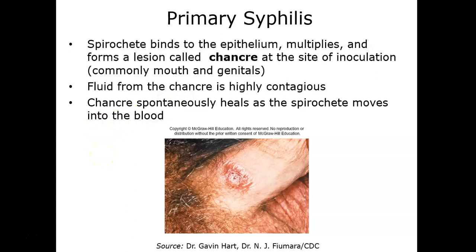In primary syphilis, the spirochete binds to the epithelial cells and begins multiplying, creating a lesion or ulcer called a chancre at the site of inoculation — commonly the mouth and genital region. The chancre has really firm margins with a liquefied center. The fluid from the center is extremely contagious. The chancre will spontaneously heal when the microbe moves from the localized site into the bloodstream.